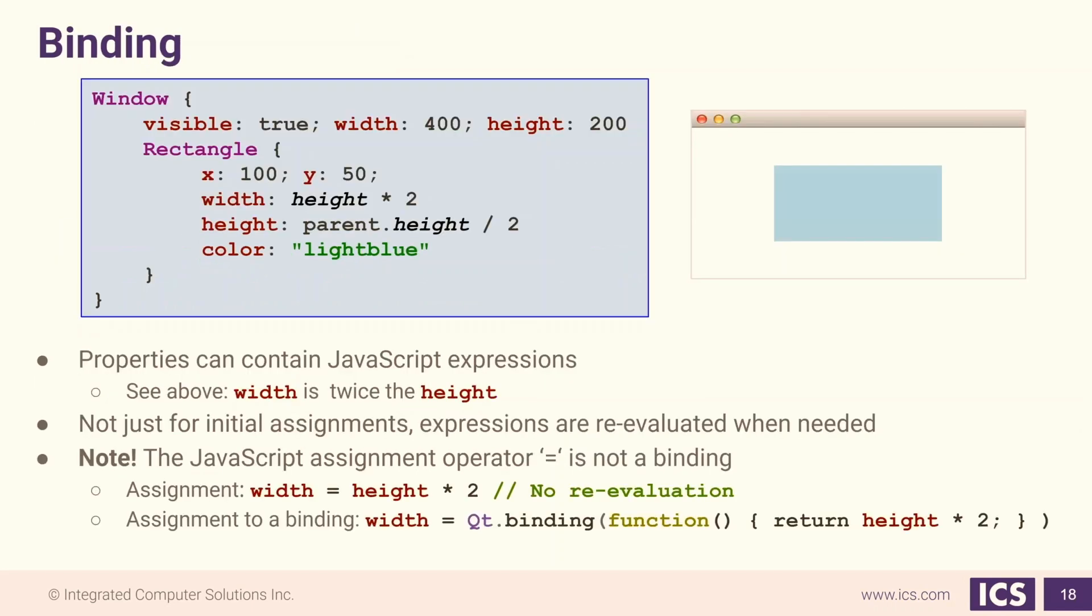Now you've heard me use the term binding several times. Let me tell you what a binding is. A binding is like an assignment, but it has one small but significant difference. The binding is re-evaluated every time the bound data changes. This means if we create a rectangle and its height and width are bound to its parent's height, at runtime, if the user resizes the window,